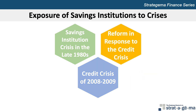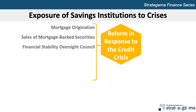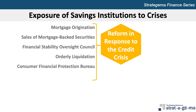Following the credit crisis, Congress enacted the Financial Reform Act in 2010, which contained numerous provisions intended to stabilize the financial system, including provisions relating to mortgage origination, sale of mortgage-backed securities, the Financial Stability Oversight Council, orderly liquidation, the Consumer Financial Protection Bureau, and trading of derivative securities.